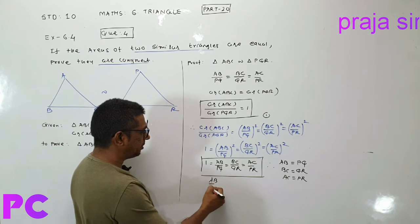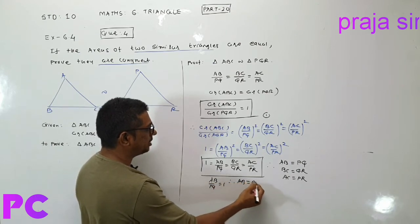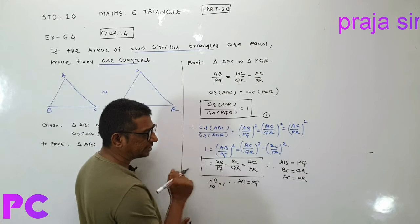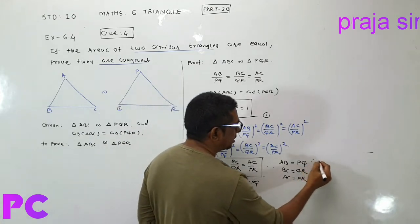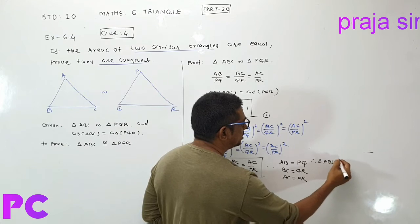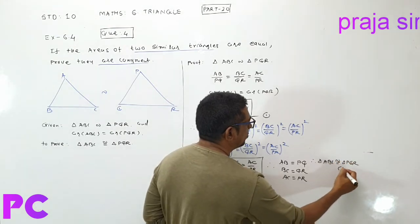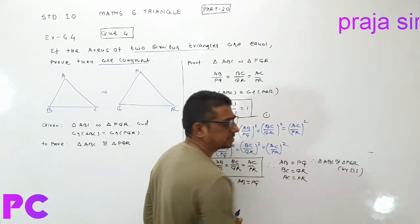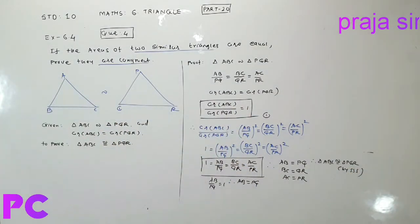If I show you that AB upon PQ is equal to 1, so that AB is equal to PQ. So we can say that triangle ABC is congruent to triangle PQR by SSS theorem. It is very easy, very easy.